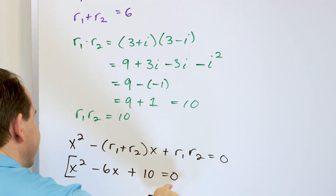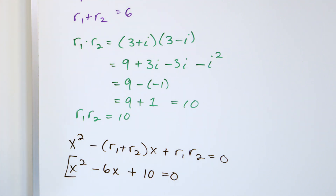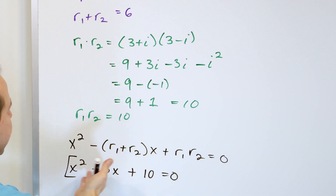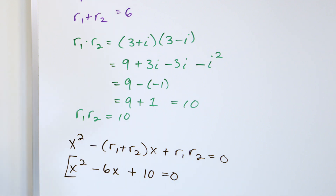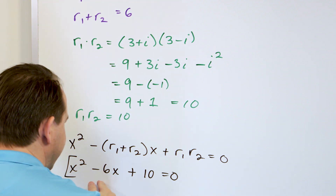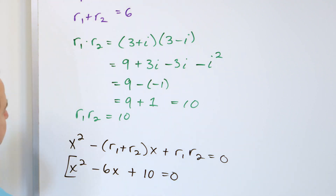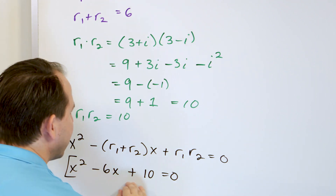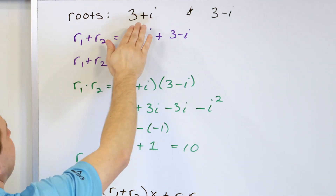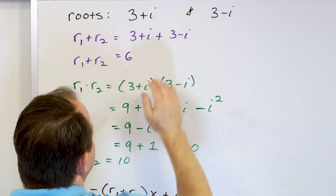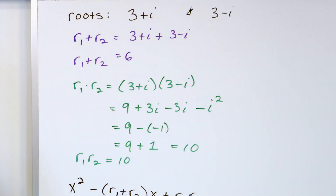So you have x squared minus 6x plus 10 equals zero. If you were to plot this, you'd find there are no real crossings of the x-axis. But if you run it through the quadratic formula, the two answers you get are 3 plus i and 3 minus i.